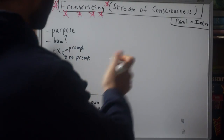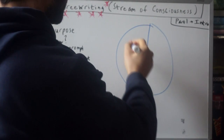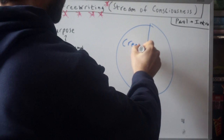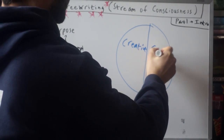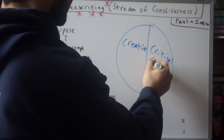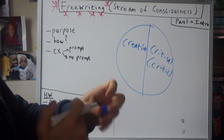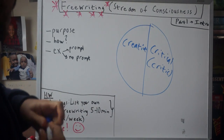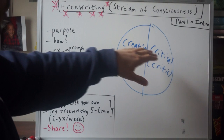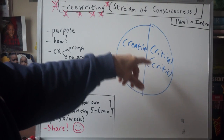So here's a brain — a caricature of the brain — and we have two sides: we have a creative side and we have a critical side, or I call that the critic. You might think of it as the analytical side; it likes to analyze.